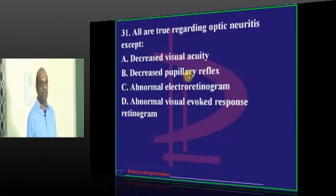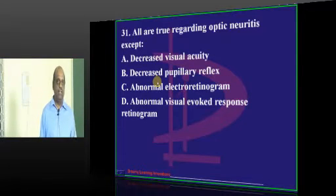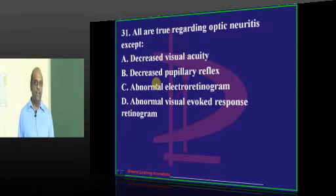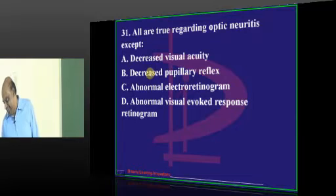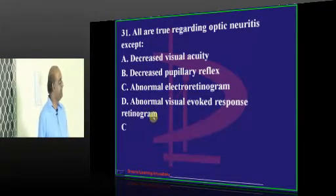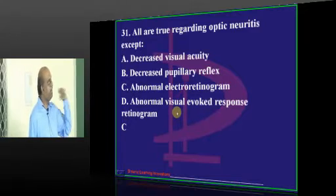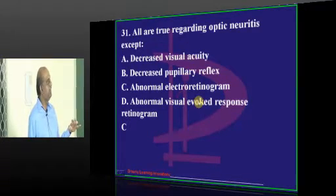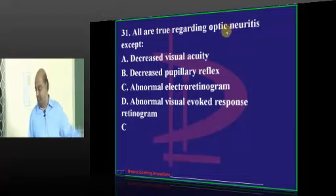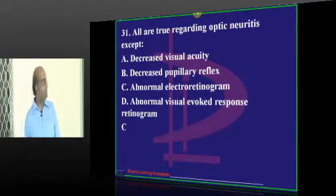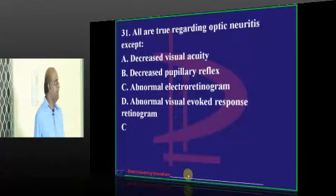In optic neuritis, we just studied that afferent pupillary defect can affect the pupillary reflex. Everyone says D, but that is not right. The electroretinogram (ERG) will be normal in optic neuritis. Visual evoked potential (VEP) will be abnormal because VEP tests the optic nerve — abnormal visual evoked response is expected in optic neuritis, not an abnormal ERG.